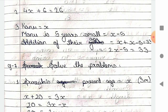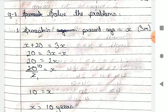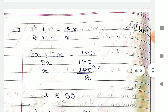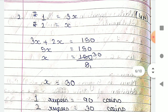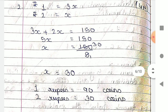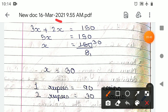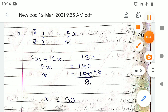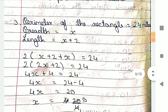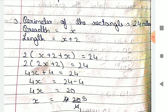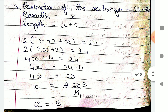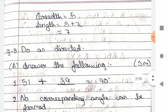You only have to write the equation, not solve further. Sures' present age is x, so x plus 20 equals 3x, giving 20 equals 2x, so x equals 10 — after 10 years he will be 30. For coins: one-rupee coins equal three times two-rupee coins, so 3x plus 2x equals 150. Solving gives x equals 30, so one-rupee coins equal 30. For the rectangle: breadth is x and length is x plus 2, giving x equals 5, so breadth is 5 and length is 7.